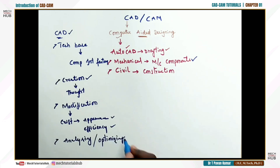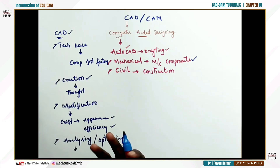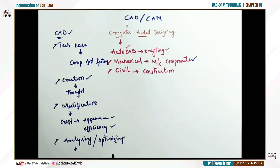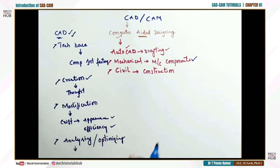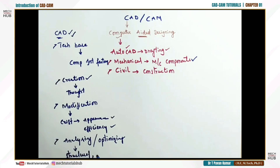CAD also helps in analyzing and optimizing a model. From a mechanical point of view, once you have modeled a component, it needs to be analyzed to determine whether it can withstand the required loading conditions for a given environment — and this must be decided before manufacturing. In CAD, you can make conceptual drawings, transform them into 3D models, and then analyze them using structural analysis, thermal analysis, or fluid analysis.